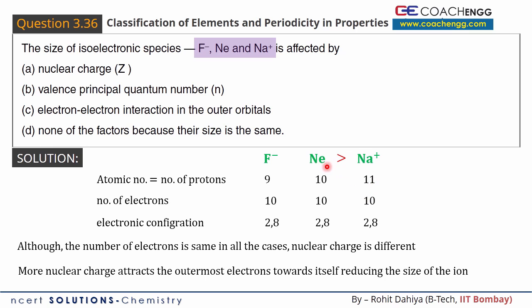So in comparison to Na plus, neon's size is larger, and in comparison to neon, fluorine has fewer protons, meaning the F minus ion's size is even larger.